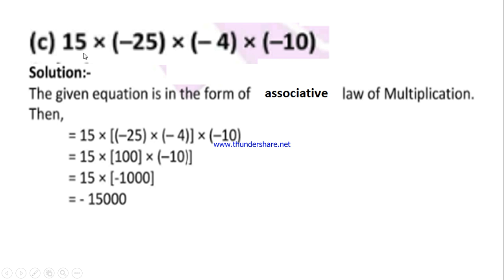We are going to use associative property. If we look at the question, which two numbers can be multiplied to make the product as a round figure like 10, 100, 1000? This 25 × 4 gives you 100.